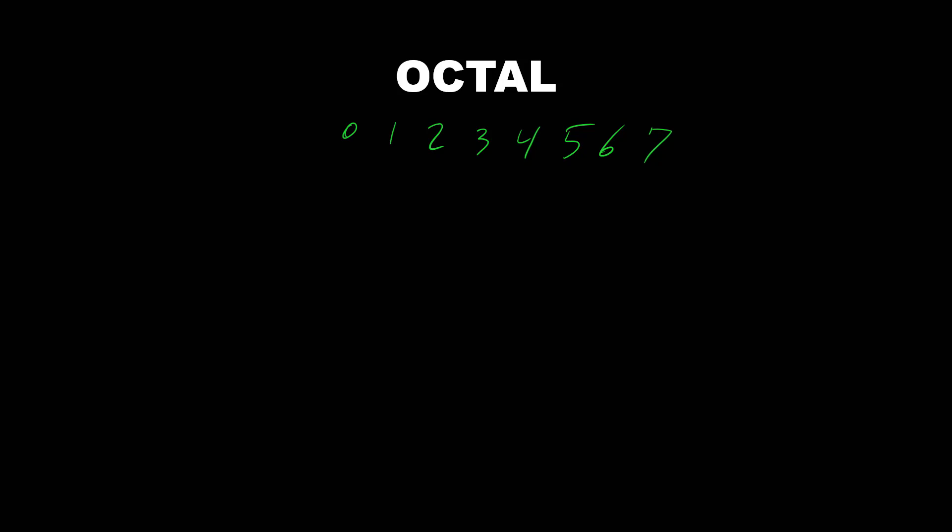Therefore, for every octal number, we have three bits. Let's see why. So if this is our octal number, and here if this is our binary number, and here our decimal number. So octal number range 0 to 7. For every octal, we have three bits.